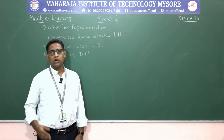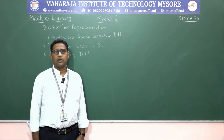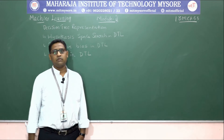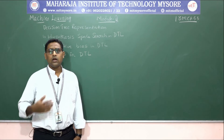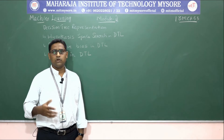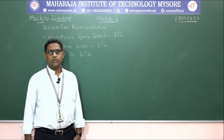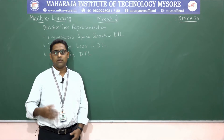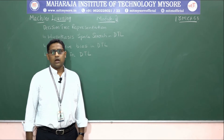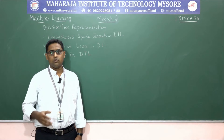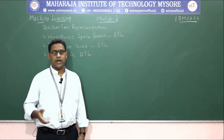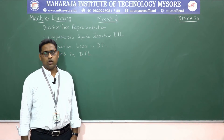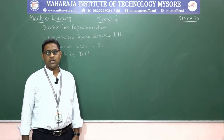In a decision tree, the root node is determined by finding which attribute has the maximum information gain value. That attribute becomes the root node, and then the next maximum gain attribute is searched from the branches, which becomes the next node for further branching.